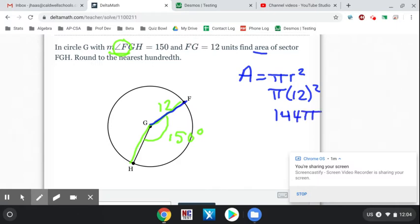Once I have done that, that would be the area of the entire circle. But I don't want the entire circle. I just want that one wedge, the sector. So I multiply by the fraction of the circle I have, which is 150 out of the whole circle, 360 degrees. That's what fraction of the circle I have: 150 out of 360. Multiply that by 144 pi.